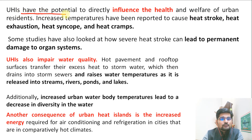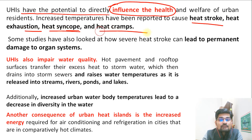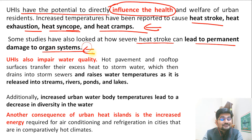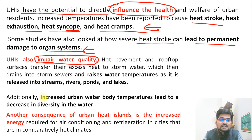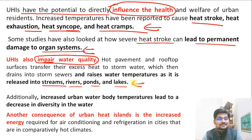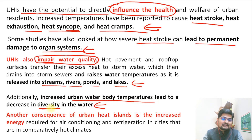Urban heat islands have the potential to directly influence people's health. Heat stroke, heat exhaustion, heat syncope, and heat cramps are very common in urban areas during summer. Severe heat stroke can lead to permanent damage to organ systems, organ failure, brain hemorrhage, heart disease, and lung disease. Urban heat islands also impair water quality as normal water temperatures are raised, and this warmed water is released into nearby streams, rivers, ponds, and lakes — disrupting the ecosystem. Increased urban water body temperatures also lead to a decrease in biodiversity.